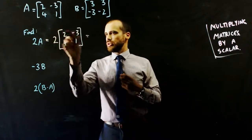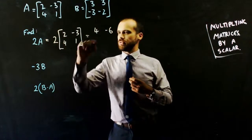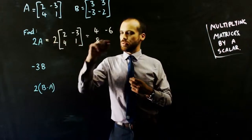So it's going to be 2 times 2, which is 4. 2 times negative 3, which is negative 6. 2 times 4, which is 8. And 2 times 1, which is 2.